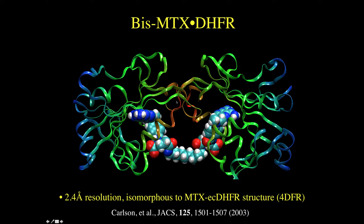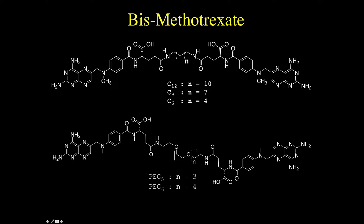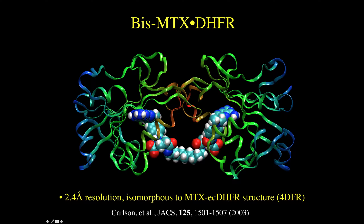We thought: if we synthesize dimers of this small molecule — referred to as bis-methotrexate — we might be able to dimerize this protein. We built different types of these with different linkers giving different water solubility and properties. When we added those to the protein, a crystal structure showed that the bis-methotrexate molecule had dimerized the protein. There's actually an induced protein-protein interface between the proteins that acts like molecular Velcro, allowing very high-affinity binding.